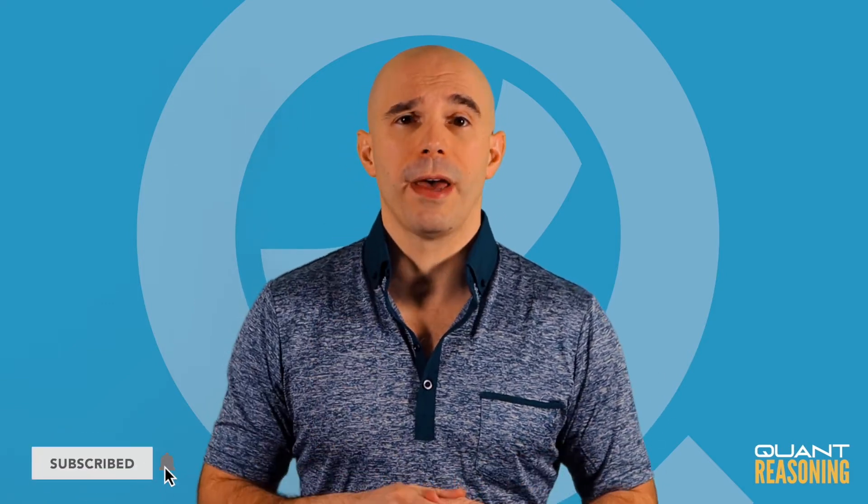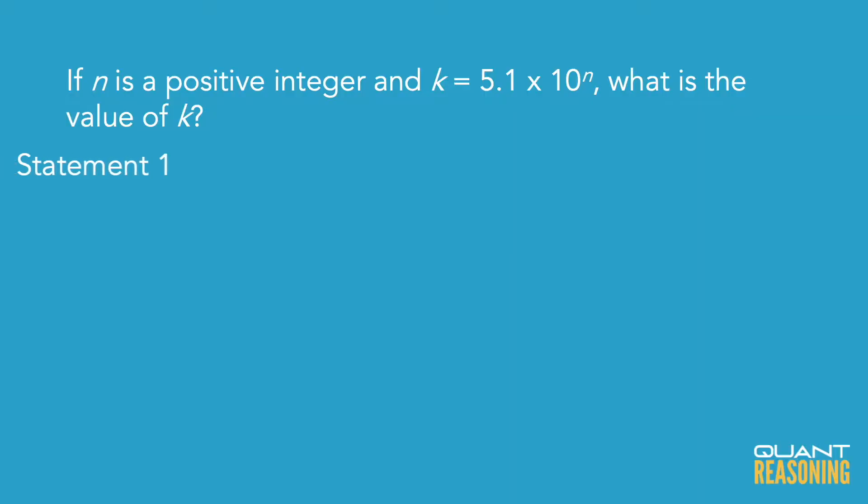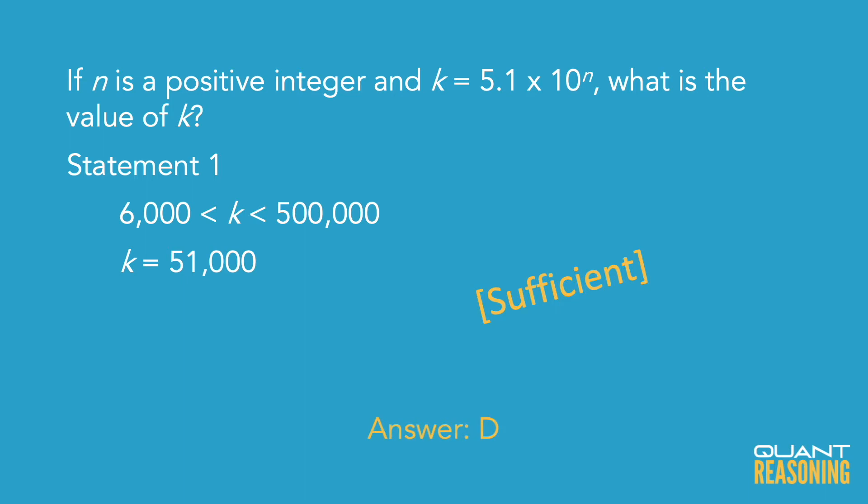This is down to B or D. Statement 1 gives us a range for k, and generally a range is not enough to find the specific value within that range. However, remember that k isn't just any positive integer — it's an integer that starts with the digits 5 and 1, followed by some unknown number of zeros. From the range provided in statement 1, can we tell exactly how many zeros follow the digits 5 and 1? We can. There's only one number in that range that starts with 5 and 1. So statement 1 is also sufficient on its own, and the correct answer is D.